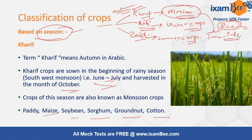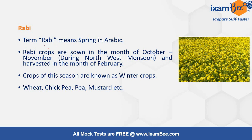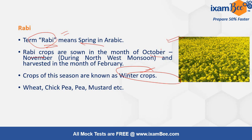These crops are known as monsoon crops. Rabi — this term in Arabic means spring. Rabi crops are those which are sown in the month of October to November. That's why they are known as the winter crops. They are harvested in the month of February–March. Examples of Rabi crops are wheat, chickpea, pea, and mustard.